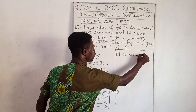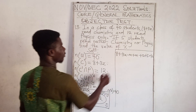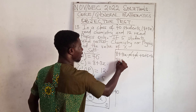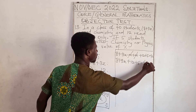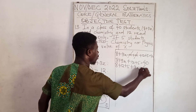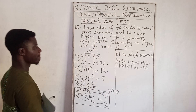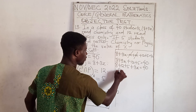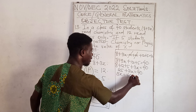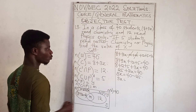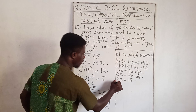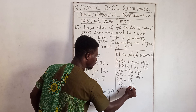So 8 + 12 + 5 + 3X = 40, which gives 25 + 3X = 40. Therefore 3X = 40 − 25 = 15, and dividing both sides by 3 we get X = 5. The answer to question 13 is Option C.